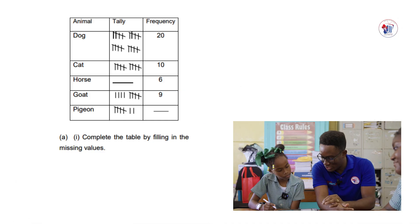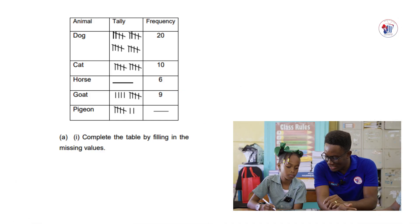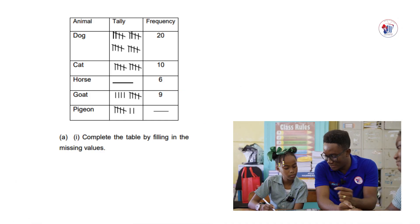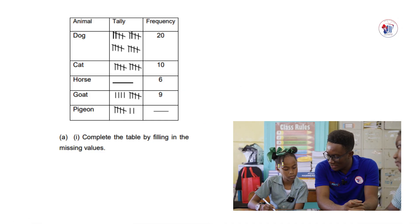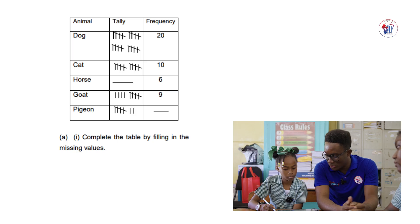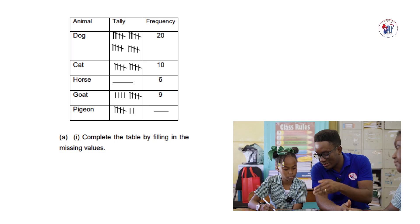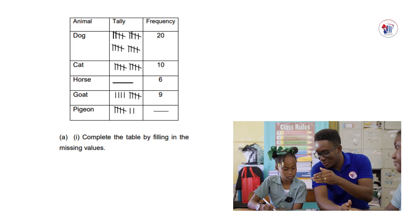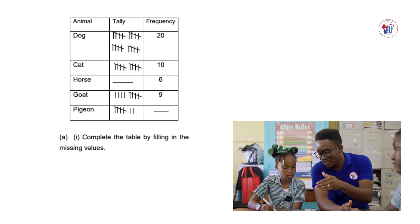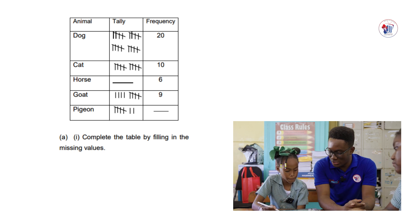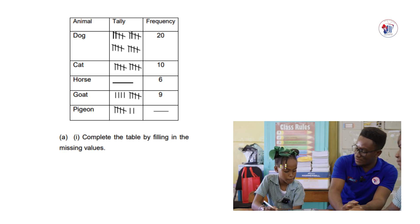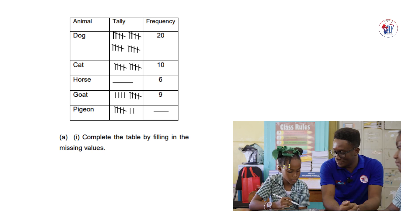So Maya, your question says: we have a frequency table, a tally chart, and you're asked to complete the table by filling in the missing values. You have dog, cat, horse, goat, and pigeon. You have some tally and then a frequency. The floor is yours, go ahead.